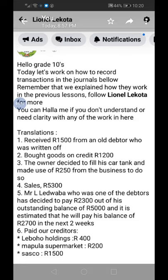Now let's classify the transactions. Number one: we received 1500 from an old debtor — when we receive money, it goes straight under the CRJ. Number two: bought goods on credit for 1200 — this has nothing to do with cash payment or cash receipt because we didn't pay cash; we only record it when we pay the money. Number three: the owner taking 250 for petrol — it's CPJ, recorded under sundry accounts as drawings. Number four: sales for 5300, we receive cash, which goes under CRJ.